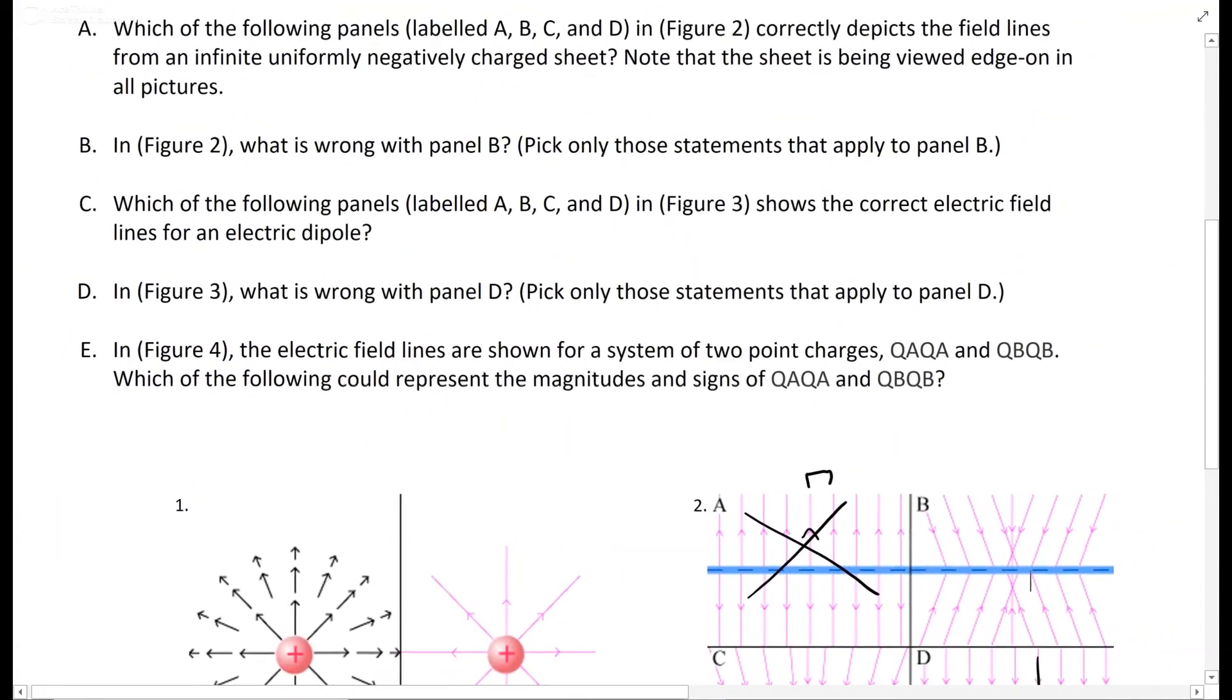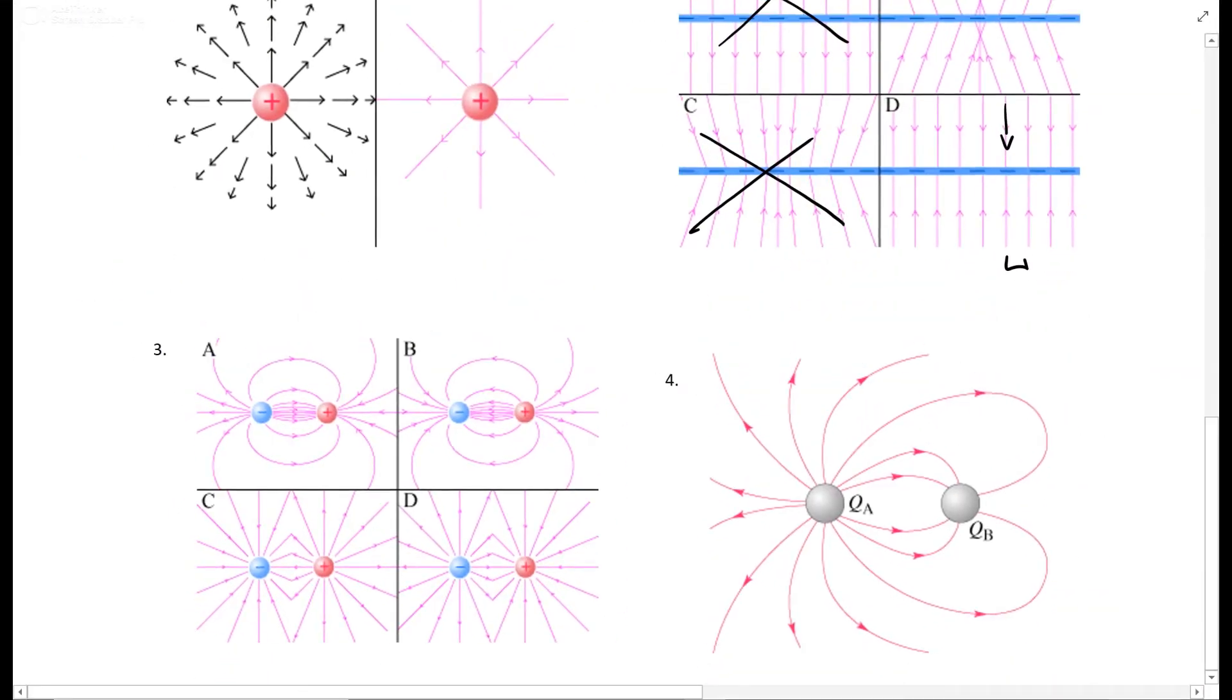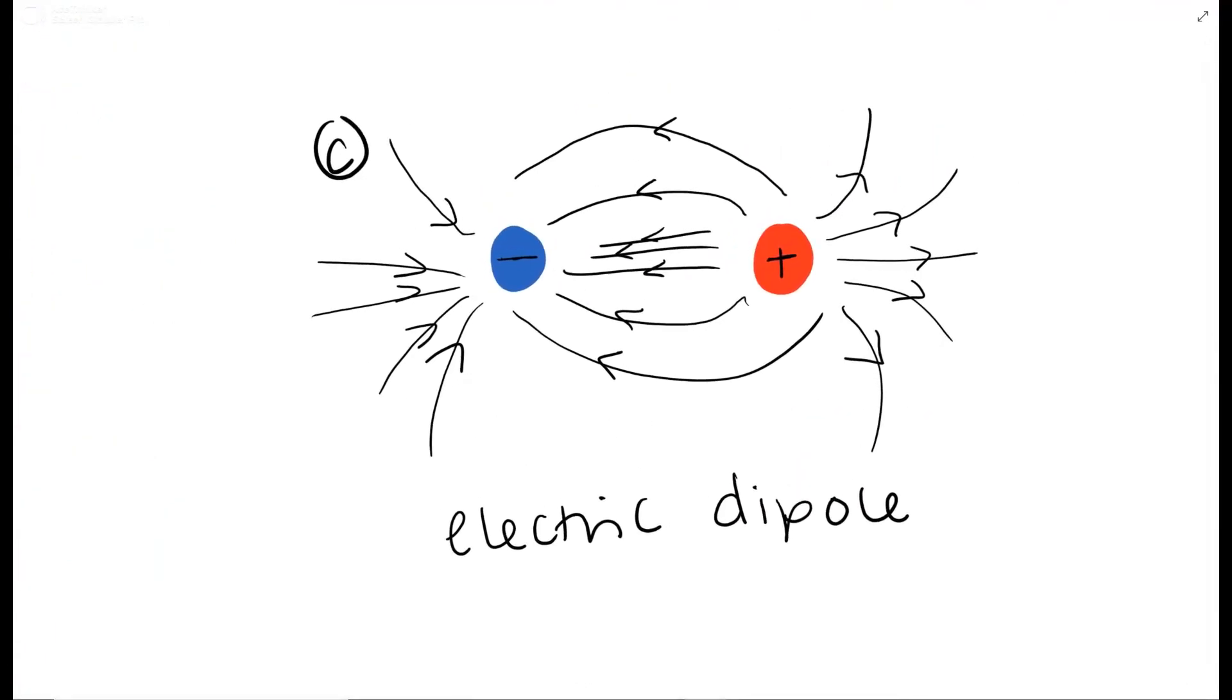Part C is asking which of the following panels in figure 3 shows the correct electric field lines for an electric dipole. They're kind of difficult to see, so I drew my own that should be correct. Obviously, you have a negative and a positive because it is a dipole. Field lines are always pointing towards the negative and away from the positive. And they are curved because they come from the positive and go to the negative. So it needs to be curved.